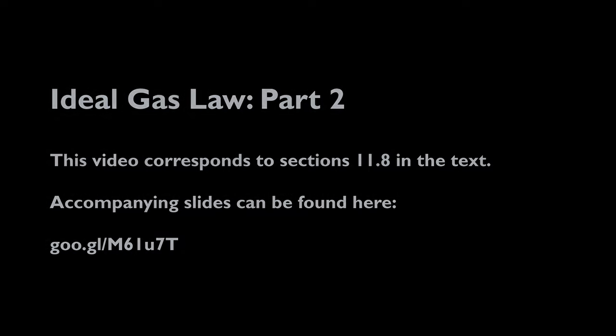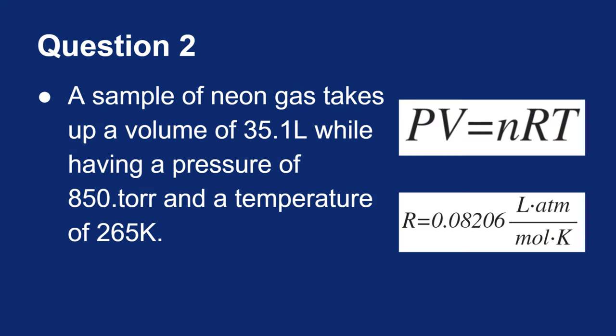Let's look at another example using the Ideal Gas Law. Here we're given a sample of neon. We know the volume is 35.1 liters, and the pressure inside the container is 850 torr, and we know the temperature is 265 Kelvin. The question is asking what mass of neon is present in this sample.